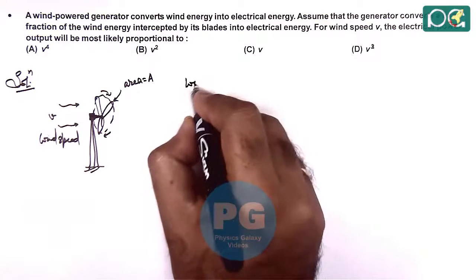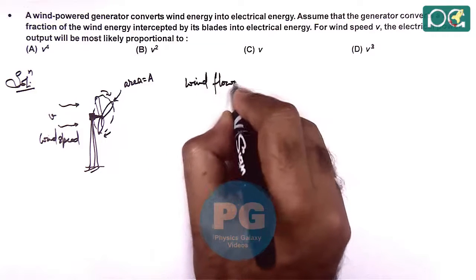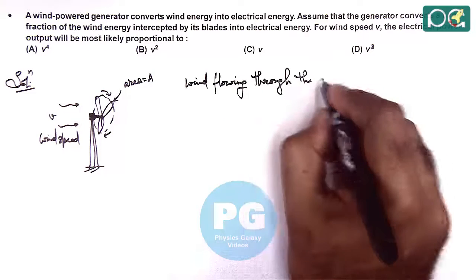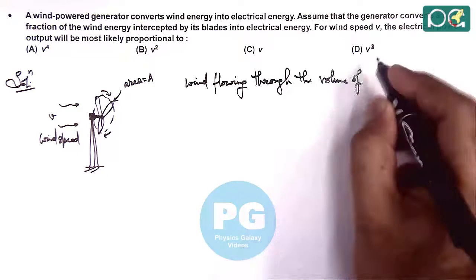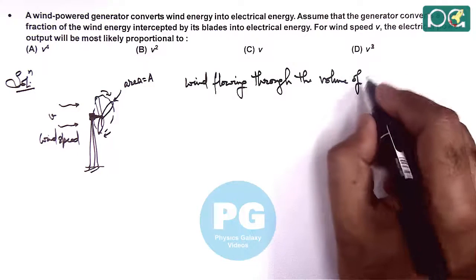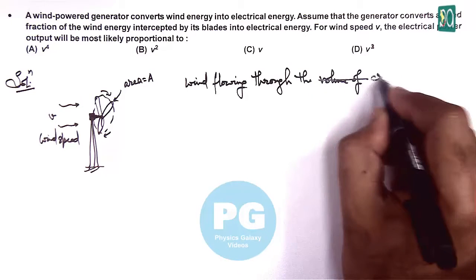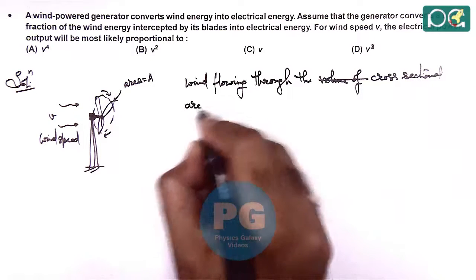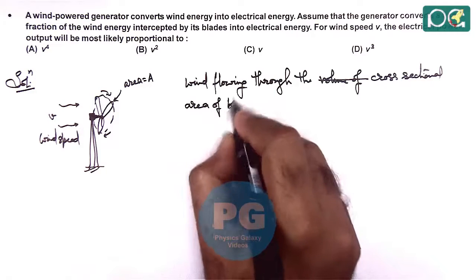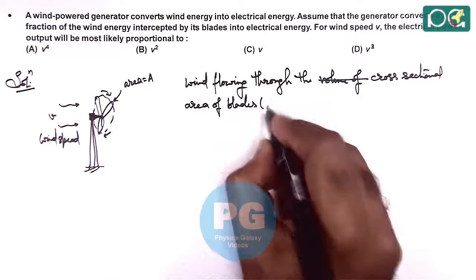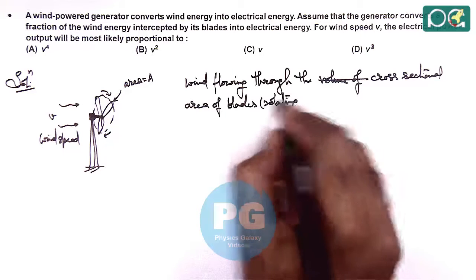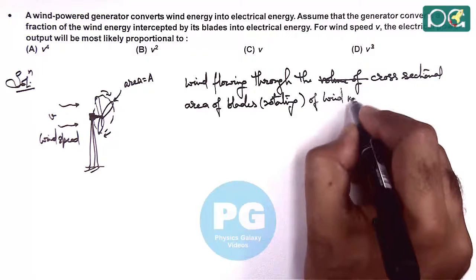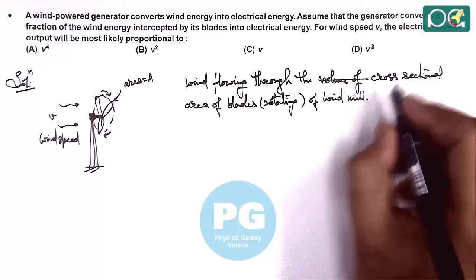So we can write wind flowing through the volume, or cross sectional area - more precisely we should write cross sectional area of blades which are considered to be rotating of windmill, or which can be written as wind generator, is given as...